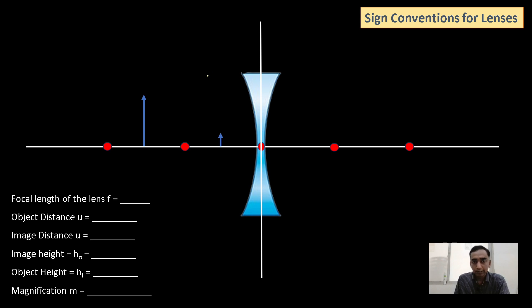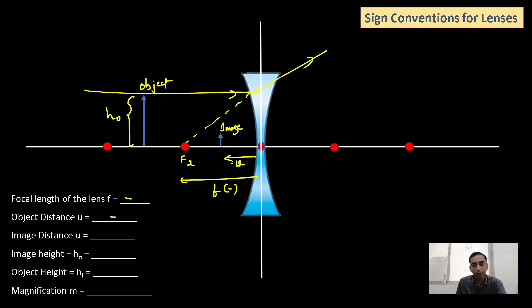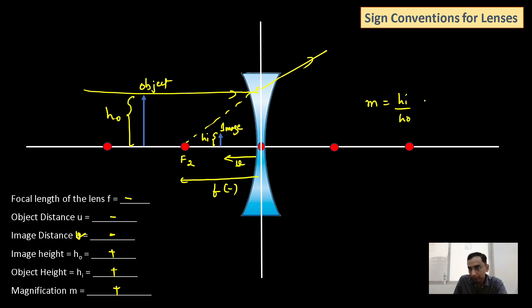For concave lenses, f2 is on the left-hand side, so the focal length is considered to be negative because f2 decides the focal length. Object distance is on the left-hand side, so negative. Image distance is also negative because it is a virtual image on the left-hand side. Height of the object is positive, height of the image is positive, and magnification is also positive. However, magnification will be less than 1 because the height of the image is smaller compared to the height of the object. So for concave lenses, magnification is positive but less than 1.